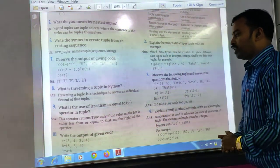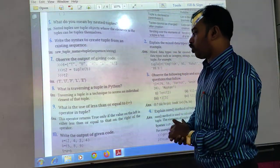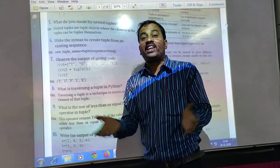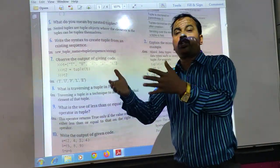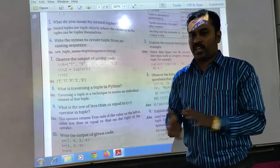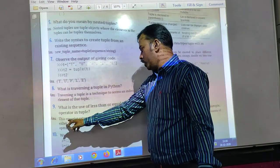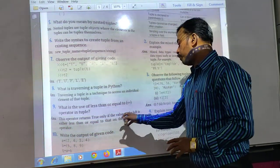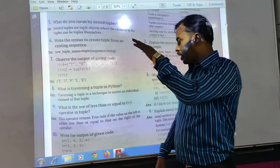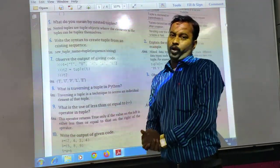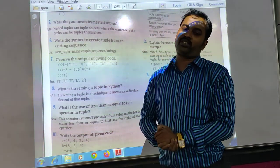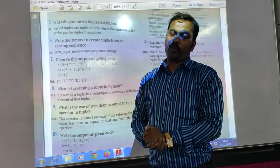Last and final question. What is the use of less than equal to operator in tuple? Less than equals to is called the relational operator. Less than equals to, greater than equals to, not equals to, equals to equals to. These are all relational operators. Equals to equals to is the equality operator. This operator returns true only if the value of the left is either less than or equal to, compared to the right hand side value. Rest of the programming section and error checking section we will discuss in my next video.